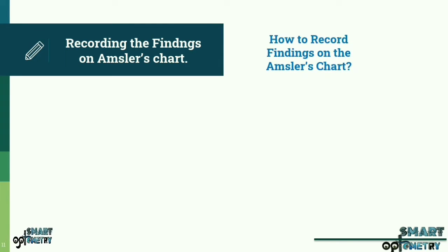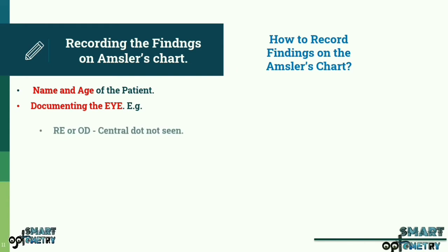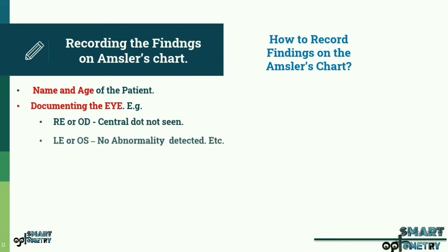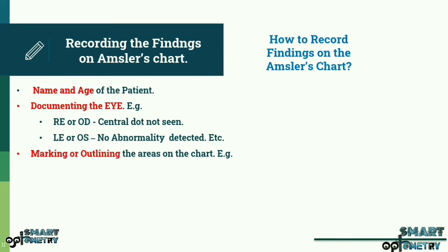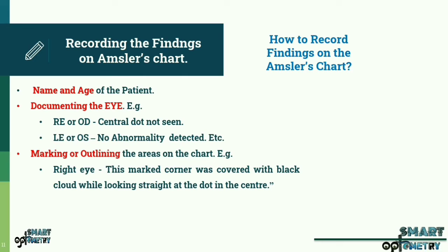Recording the findings on Amsler's chart. How to record findings on the Amsler's chart? The following data needs to be recorded on the Amsler's chart: Name and age of the patient along with the date on which the test is performed. Documenting the eye to which the chart that is showing changes belongs to when both eyes were tested uniocularly with separate Amsler's grid used for each eye. Example: right eye or OD, central dot not seen. Left eye or OS, no abnormality detected, etc. Marking or outlining the areas on the chart that showed changes as indicated by the patient and describing them in patient's words. Example: right eye, this marked corner was covered with black cloud while looking straight at the dot in the center. The Amsler's grid findings recorded for each eye needs to be attached along with the other ocular test findings for concluding the diagnosis.